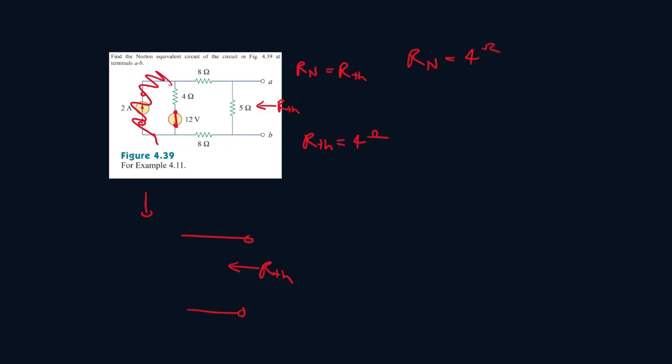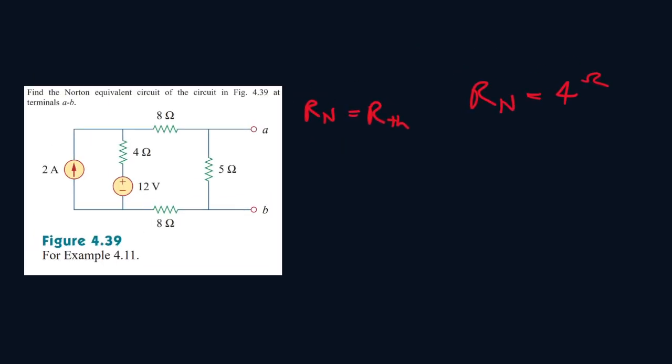Now the second part of finding the Norton equivalent is by finding I_Norton, the Norton current. To find that we short circuit and put a wire here, and the current passing through this wire will be I_Norton. So let's find that.